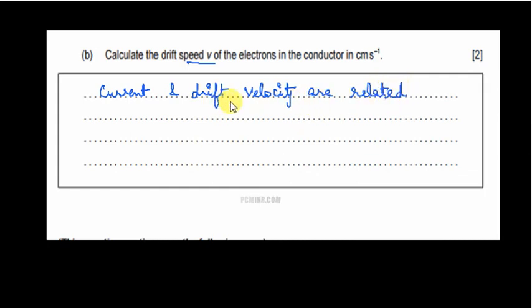Current is equal to n e A into V, where n is the number density of electrons, e is the charge on an electron, A is the area of the conductor, and V is the drift velocity. We have to find V, therefore we would keep V on the right hand side and bring down the other terms.